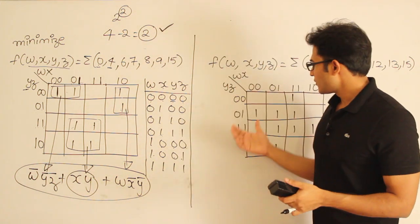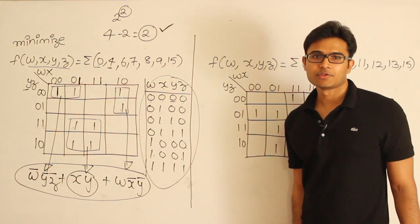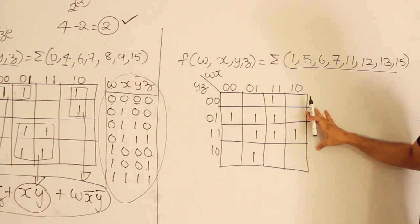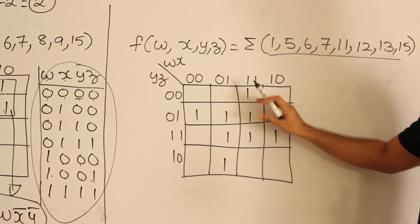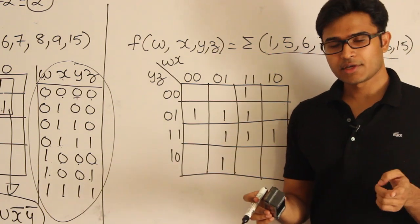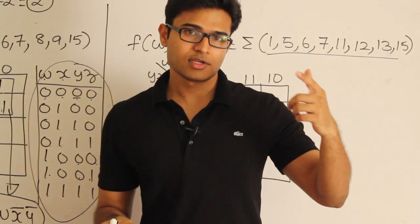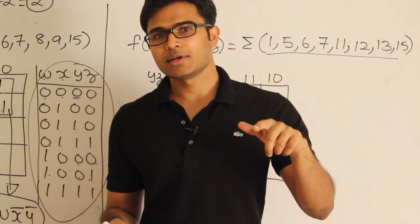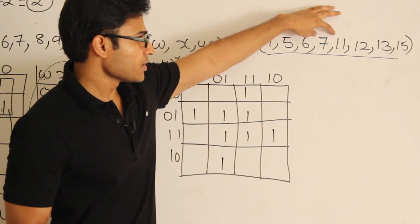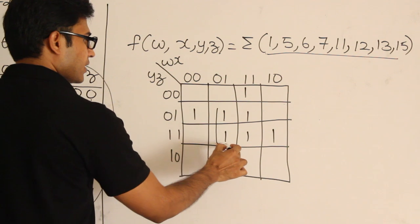Let's see one more example. From now on I'm not going to explain how to write the values on the table — I'm assuming you can do that. The function is given and I have already constructed the K-map with 1s placed. The cells not having 1s are obviously zeros. Since we are working with minterms or product terms, we don't consider zeros for now — we only consider zeros when working with sum terms.